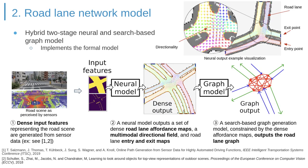The formal road lane network model is implemented as a hybrid two-stage model. First, dense input features representing the road scene are generated from sensor data — in this work, drivable region and road markings. These input features are fed to a neural deep learning model, which outputs a set of dense road lane affordance maps, a multi-directional field, and road lane entry and exit points. Finally, the search space graph model uses the dense output to generate the graph.